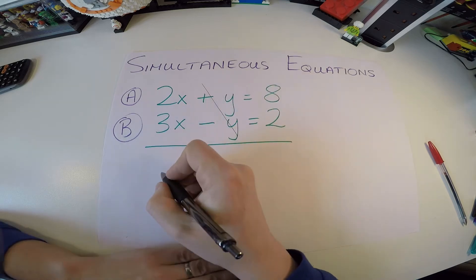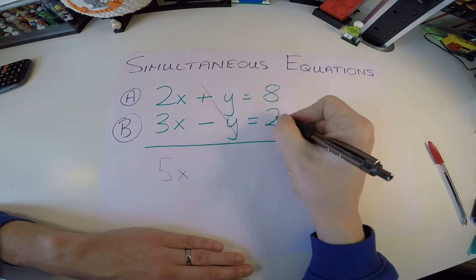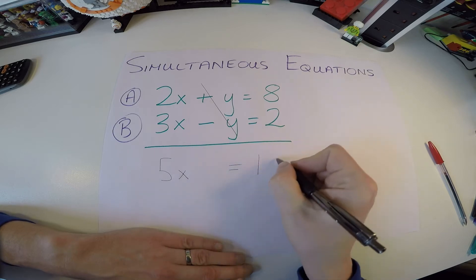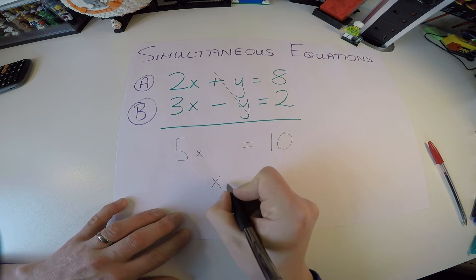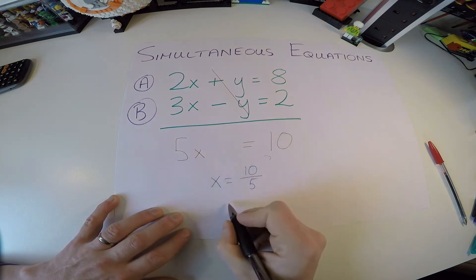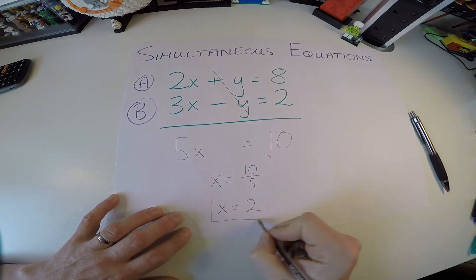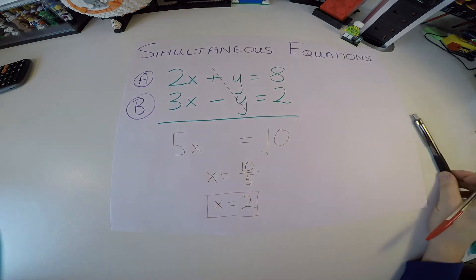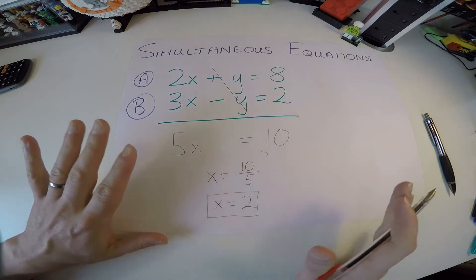2x plus 3x, that gives us a 5x, and an 8 and a 2, that gives us a 10. So 5x equals 10, that means x is equal to 10 divided by 5, when we bring this guy across. That means x must be equal to 2. So we've solved for x equal to 2, and if you've watched more of my videos, I like to put a box around a solution I get. So that means x is going to be equal to 2.